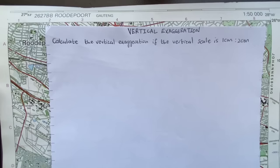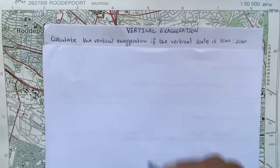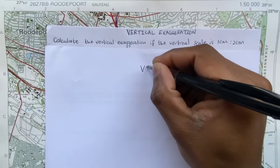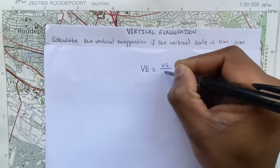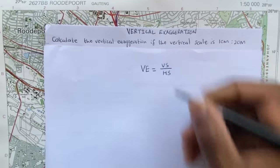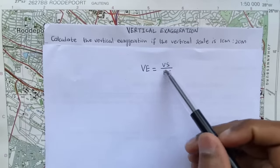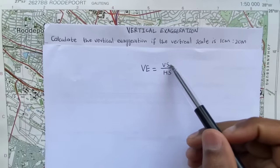So in calculating vertical exaggeration we're trying to find out how many times is the vertical distance being exaggerated for us to be able to draw a cross section. So we use the formula VE equals VS over HS.